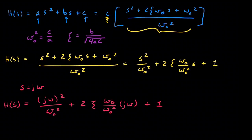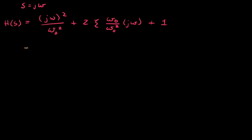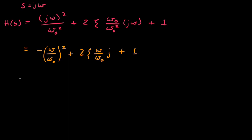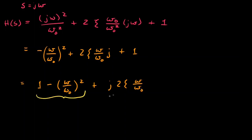After expanding that out and making a few more algebraic adjustments, we can say this equals −(ω/ω₀)² + 2ζ(ω/ω₀)j + 1, which we rearrange to be [1 − (ω/ω₀)²] + j·[2ζ(ω/ω₀)]. So this is the real part and this is the imaginary part of our transfer function.